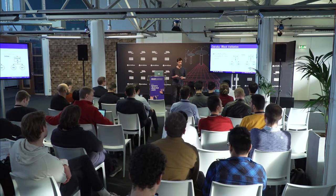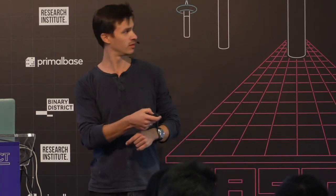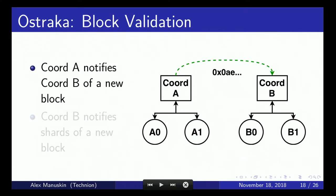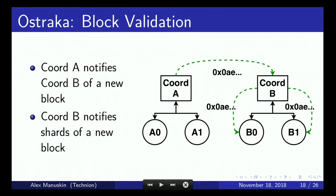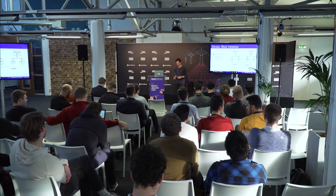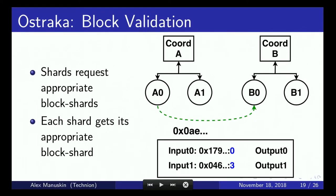So, how does a block propagate in this network? Node A has just found out about a new block and wants to propagate it to node B. Coordinator A informs coordinator B that a new block has been found. Coordinator B informs its shards. Then each shard from node B contacts its appropriate counterpart shard from node A and requests the relevant block shards. Each shard from node A sends the appropriate block shards to node B.